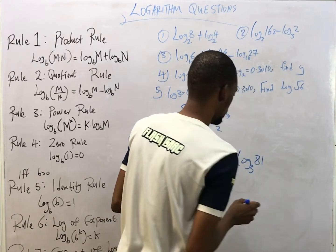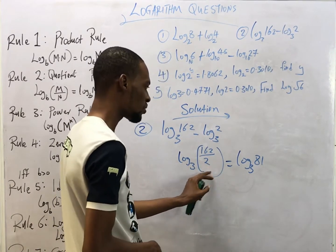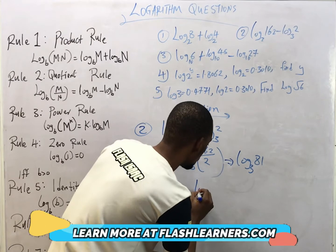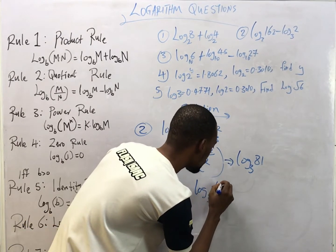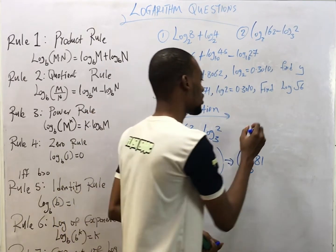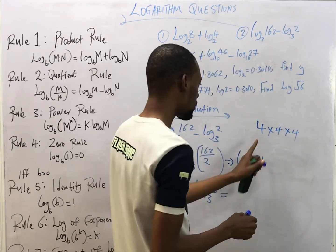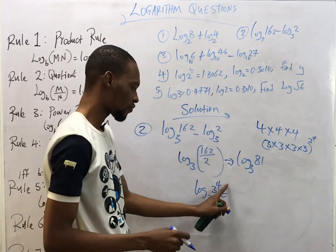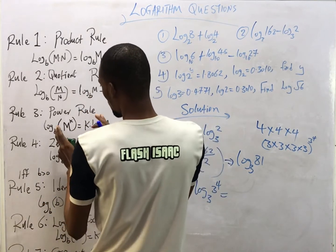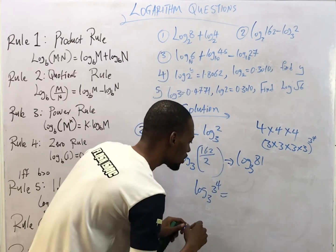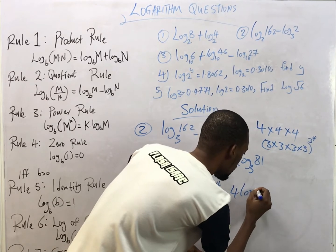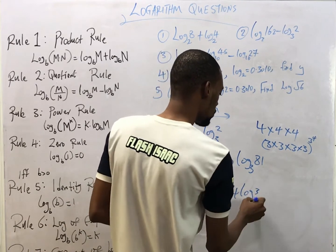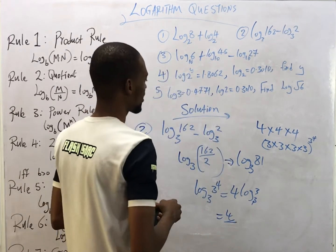We can simplify further to log base 3 of 81, because 162 ÷ 2 = 81. Now I can break this up as log base 3 of (3⁴), because 3 raised to the power of 4 equals 81. From the power rule, we bring out the 4, leaving us with 4·log(3) to base 3. By the identity rule, log(3) to base 3 equals 1, so our answer is 4.